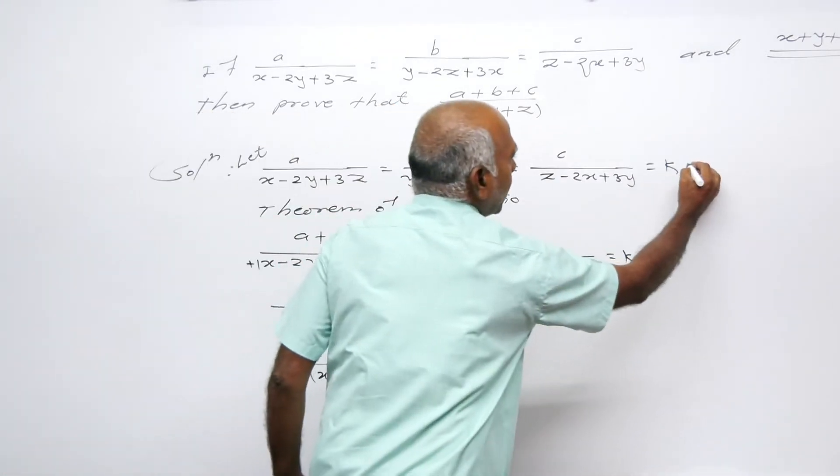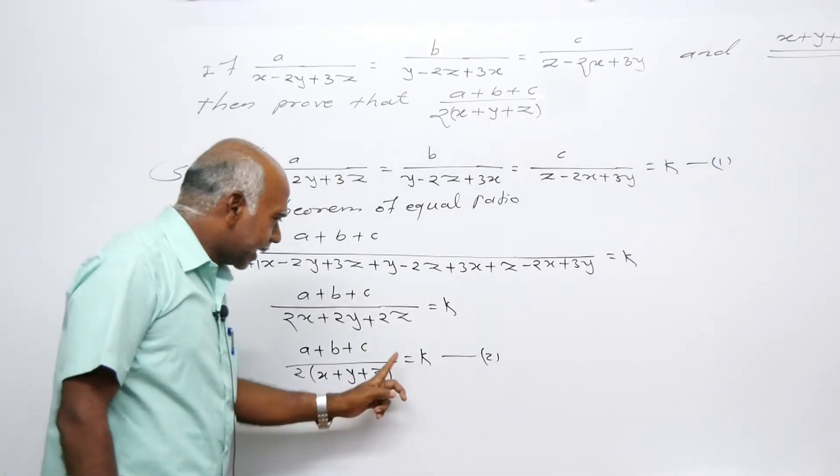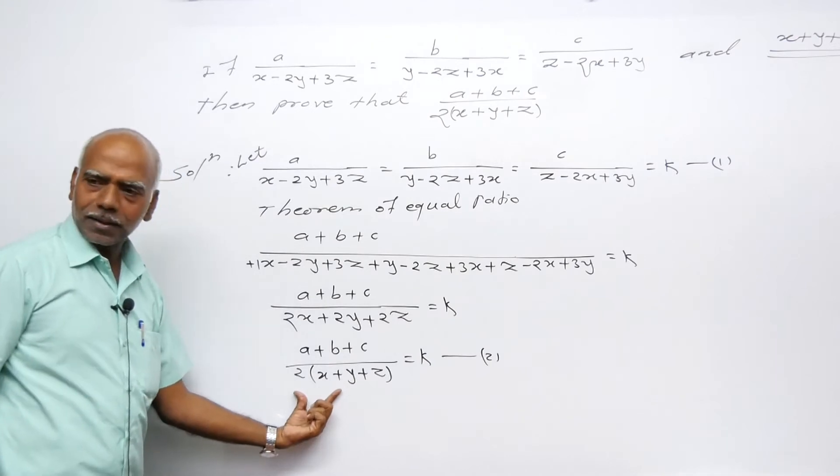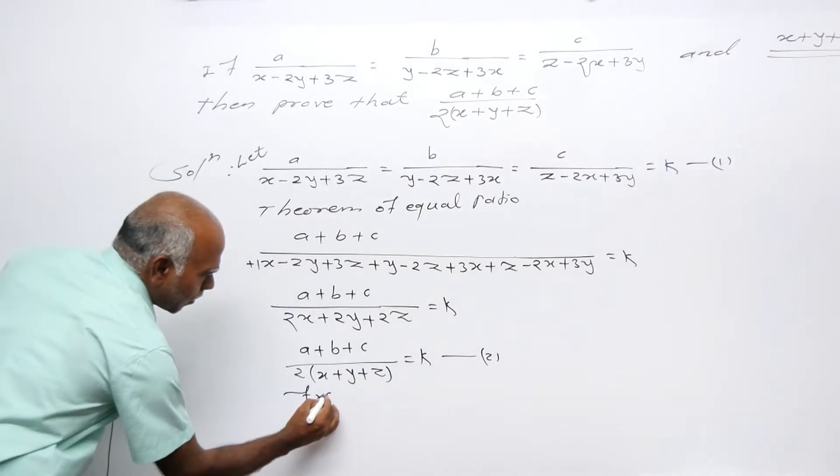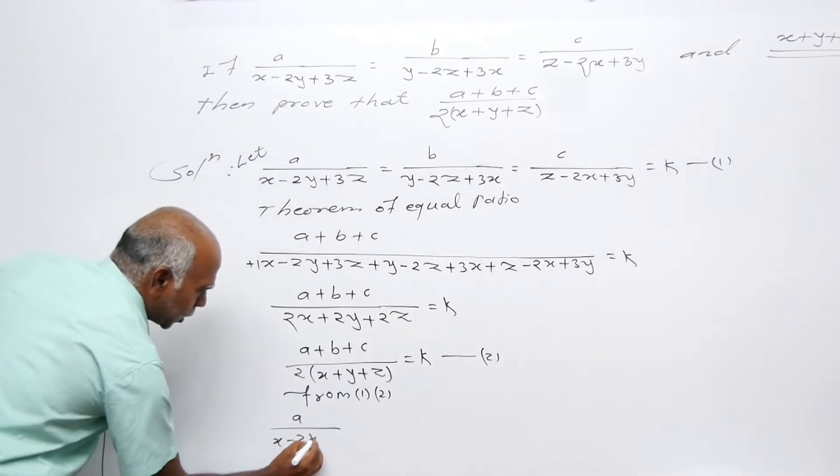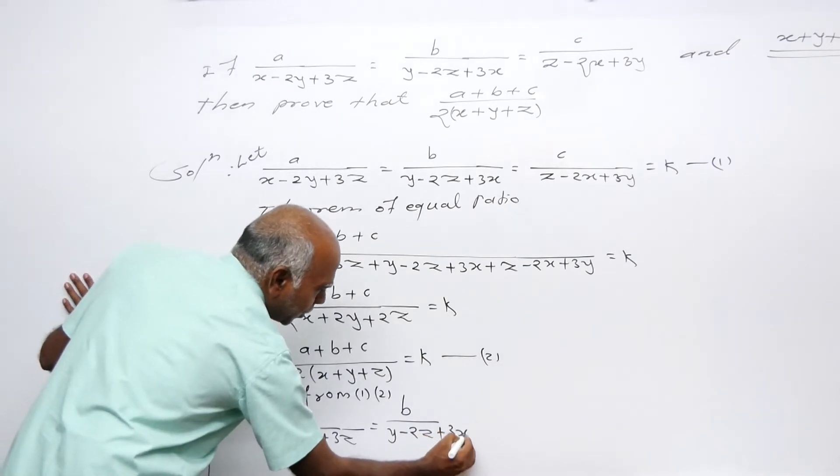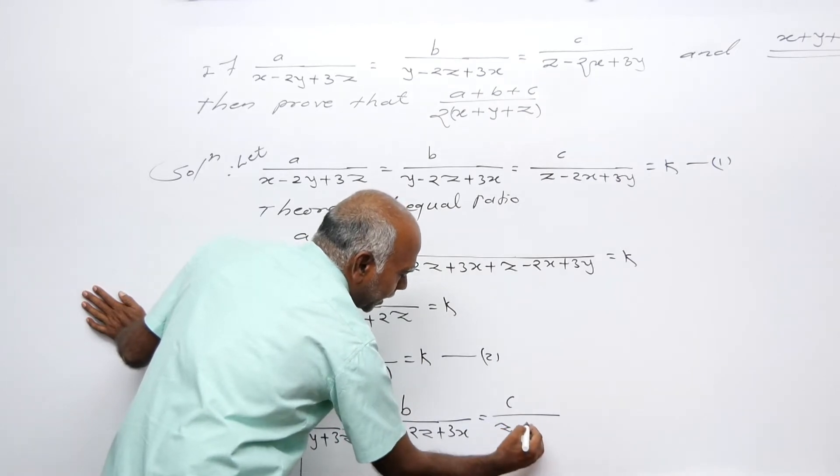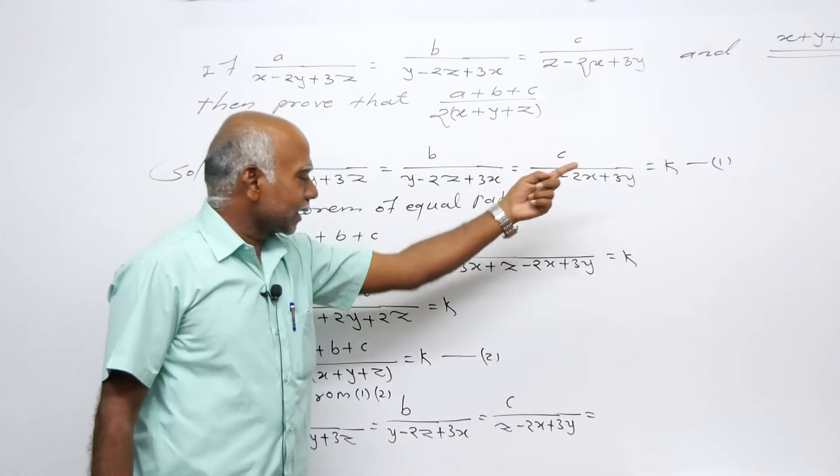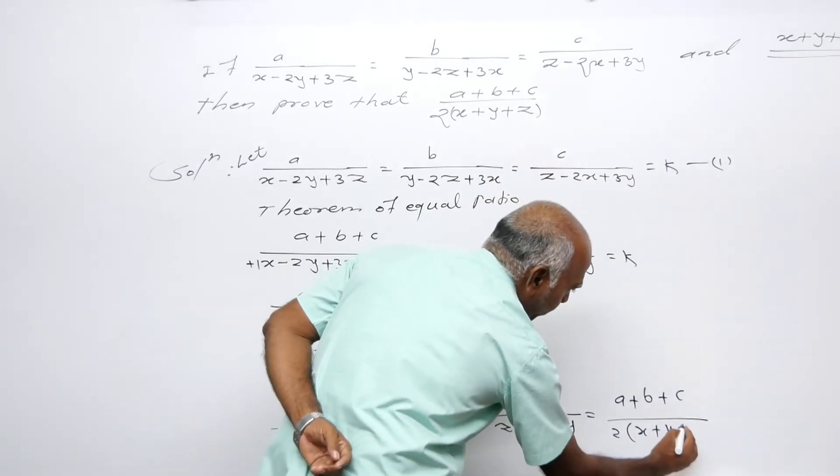Taking 2 common, we get a plus B plus C upon 2 times x plus y plus z is equal to k. This is equation number 1. From equations 1 and 2, k upon x minus 2y plus 3z equals b upon y minus 2z plus 3x equals c upon z minus 2x plus 3y equals a plus B plus C upon 2 in bracket x plus y plus z.